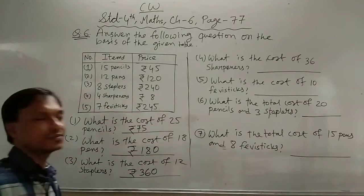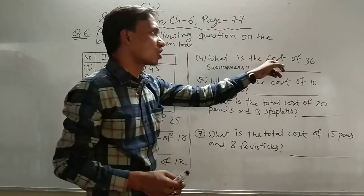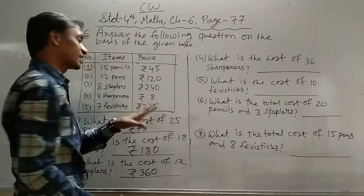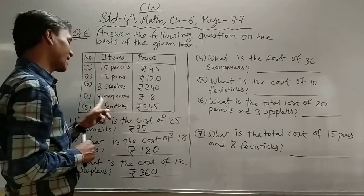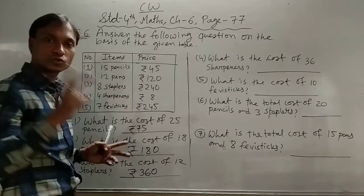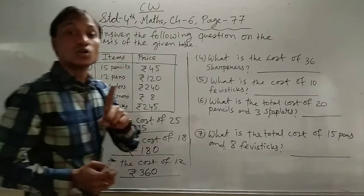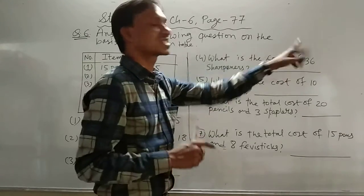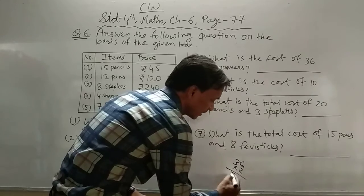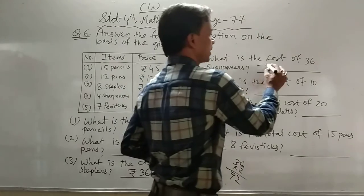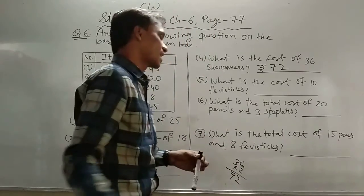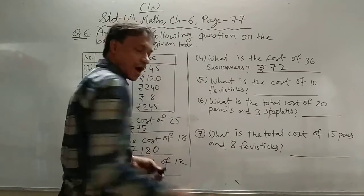Next question: What is the cost of 36 sharpeners? 36 sharpeners की cost क्या है? एक sharpener की cost find करो: 4 sharpeners का cost 8 rupees, तो 8 को 4 से divide करो — एक sharpener की cost 2 rupees। 36 sharpeners की cost: 36 into 2 = 72 rupees। यह आपको समझ आ गया students, यह खुद करना है।